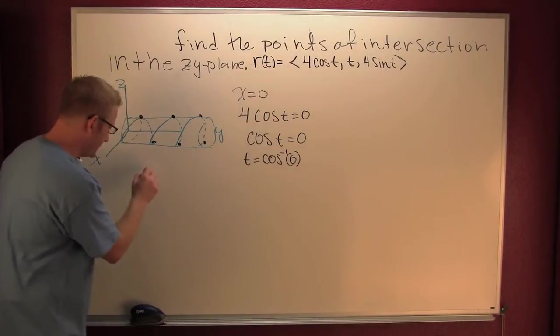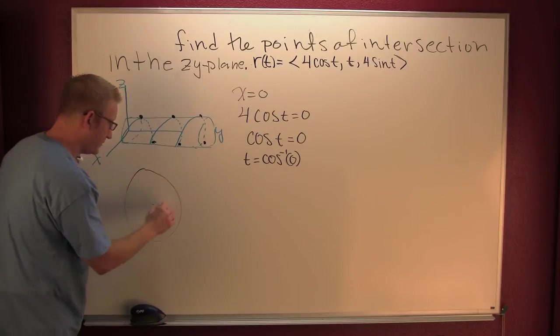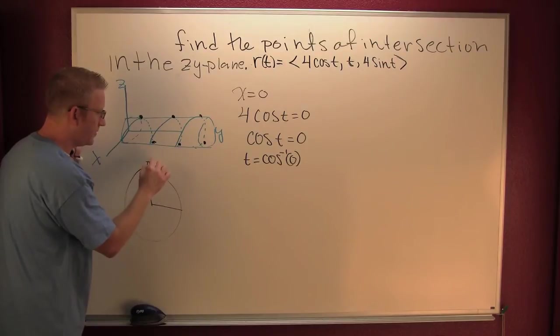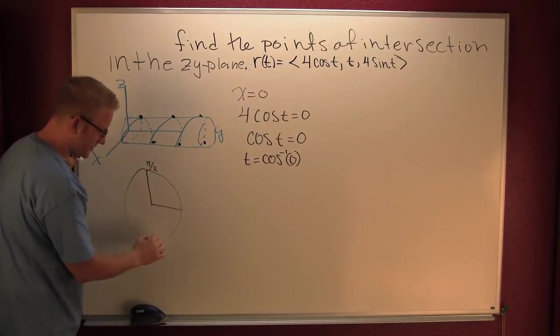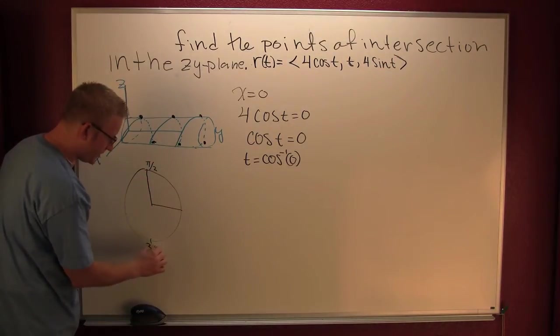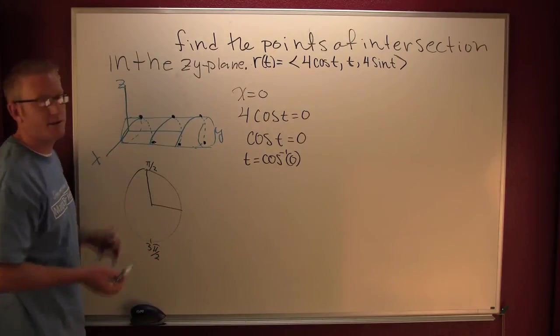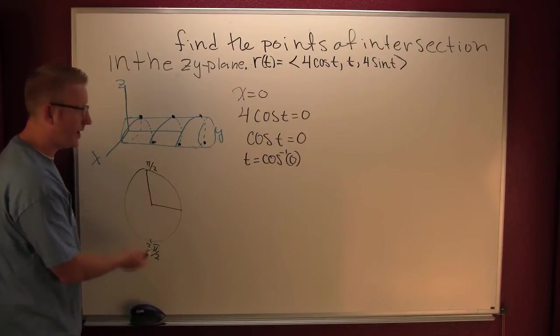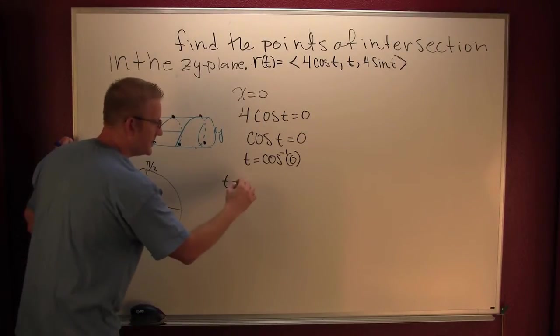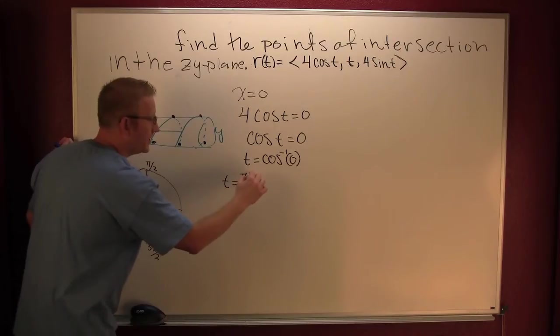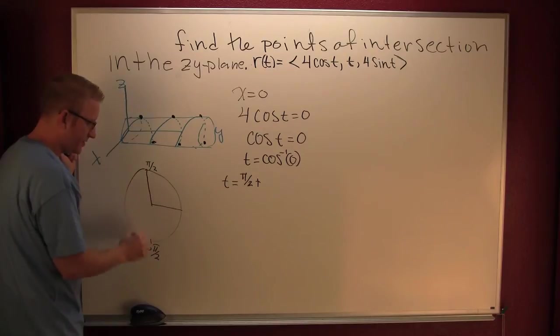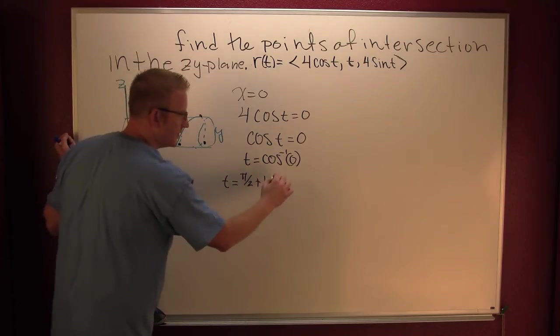Now on a unit circle, the cosine is zero up here at pi over 2, and also down here at 3 pi over 2. So these are going to be our t values. And it's going to happen every pi. So why don't we give the first one t is pi over 2, so it happens every pi after that, plus k pi.